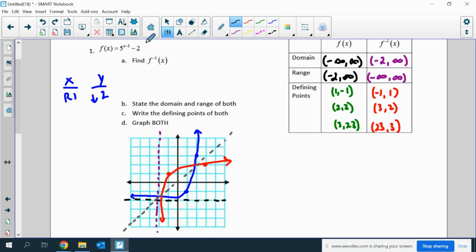Now, it's asking me to find f inverse of x algebraically. So I'm going to flip the x and y values, and then solve for y. So I'm going to add 2 to both sides. Then I will do log base 5 of both sides. So y minus 1 equals log base 5 of x plus 2. And then my f inverse function is going to be log base 5 of x plus 2 plus 1.